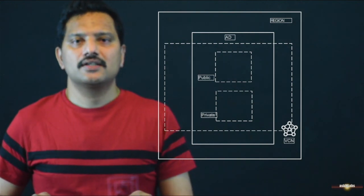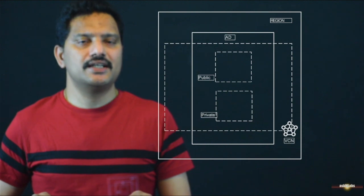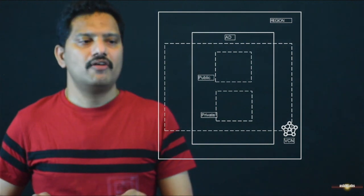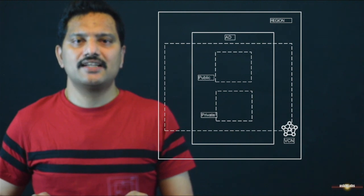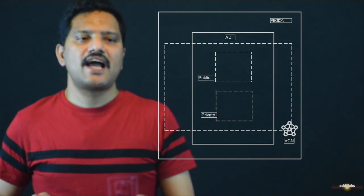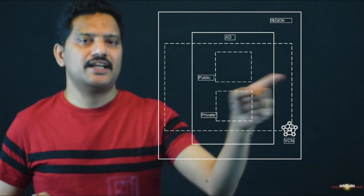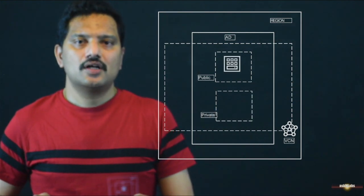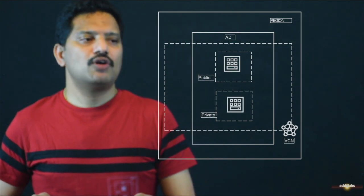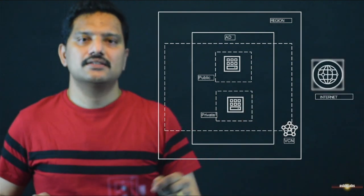A public subnet is where we create all our cloud resources, and these resources will have access to the internet, and any client from the internet can access any resource in the public subnet. Whereas in the private subnet, we create resources that are private to this cloud. Let's assume that we have two VMs defined — one VM in the public subnet and one VM in the private subnet — and also a client on the internet.